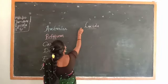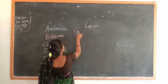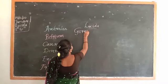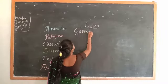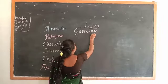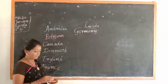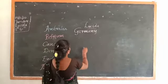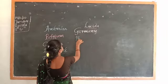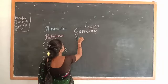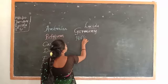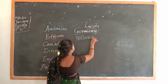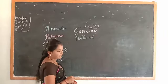Next word: Germany. Here we can see and write the word Germany. Next one: Holland. Here we can see Holland.